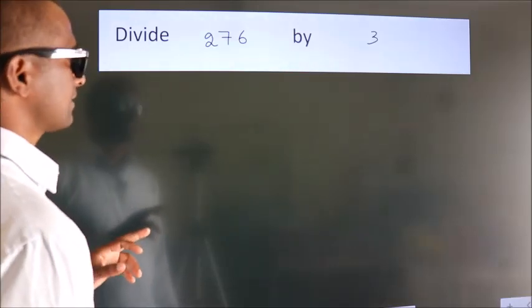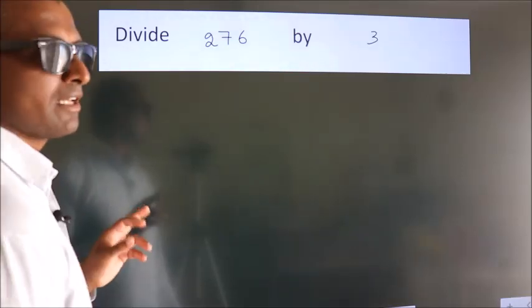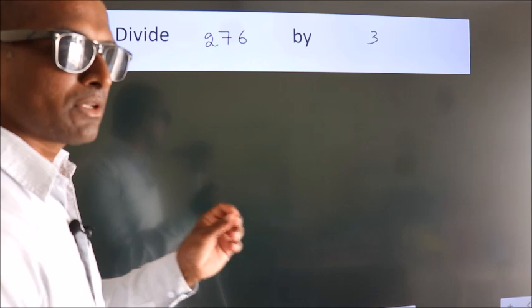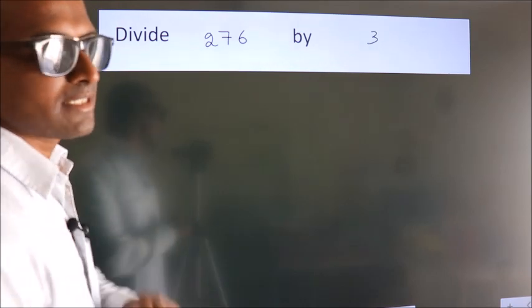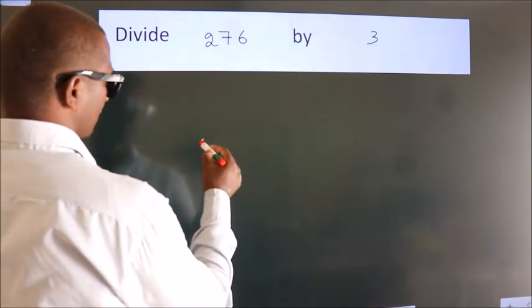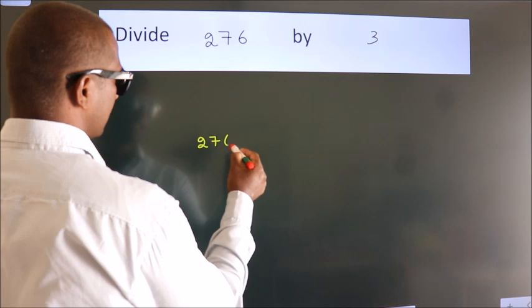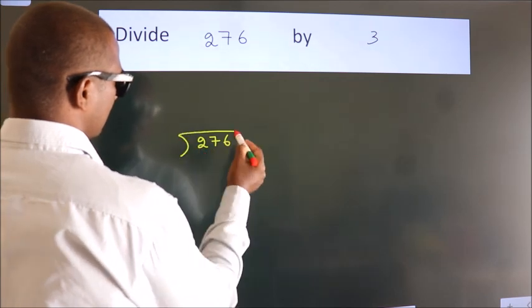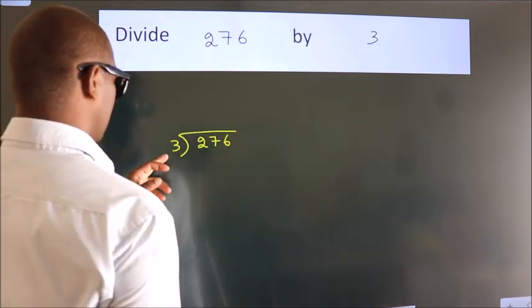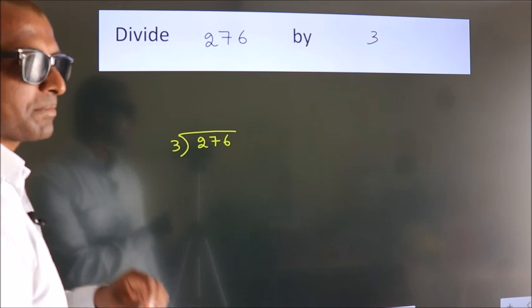Divide 276 by 3. To do this division, we should frame it in this way: 276 here, 3 here. This is your step 1.